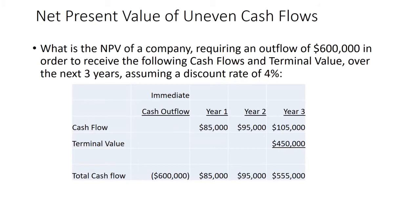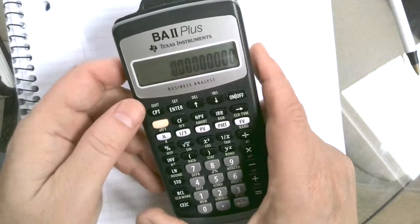Let's say this is the same problem, but there's an immediate cash outflow of $600,000. A company has approached you and said they're willing to sell for $600,000, and you've analyzed it and estimate year one earnings of $85,000, year two $95,000, year three $555,000, then you're out of the investment. The question is: are you willing to do this deal? If we get a positive net present value, the answer is yes.